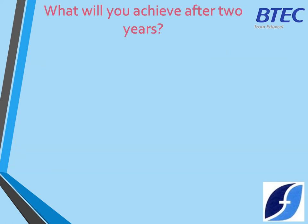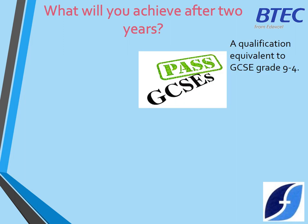So what will you achieve after the two years of the BTEC Health and Social Care course? You will have a qualification equivalent to GCSE Grade 9 to 4. BTEC courses are graded differently to GCSEs — you can be graded a Distinction Star, which is the same as Grade 9; a Distinction, the same as Grade 8; a Merit, the same as Grade 6; or a Pass, the same as Grade 4 at GCSE.